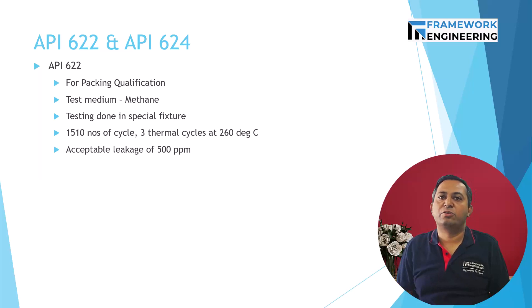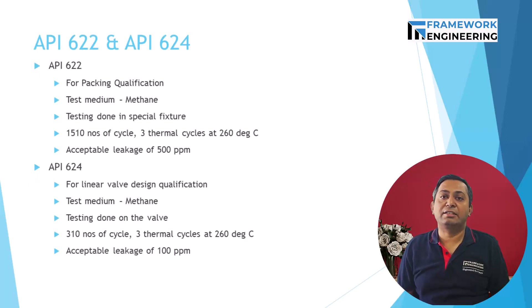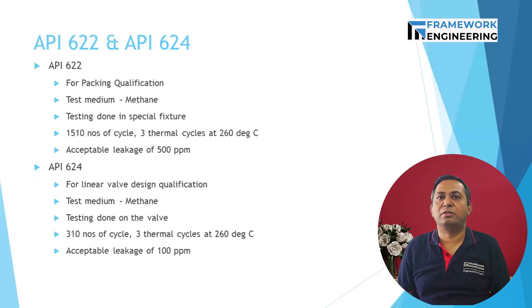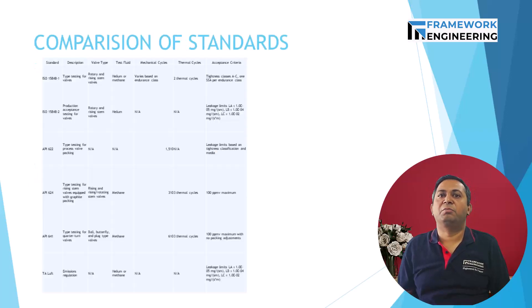API 624 is for linear valve design qualification only — rising stem valves equipped with graphite packing. It was developed in 2006 and published in 2014. The testing media is methane and testing is done on the valve itself — not on any fixture. The number of cycles is 310, with 3 thermal cycles at 260 degrees centigrade, and an acceptance criteria of 100 PPM only.